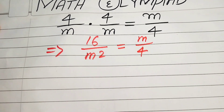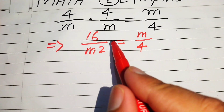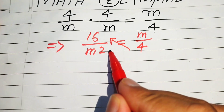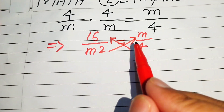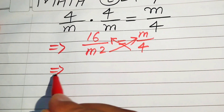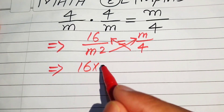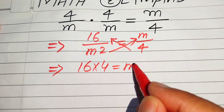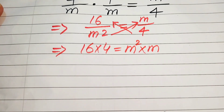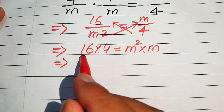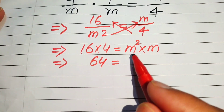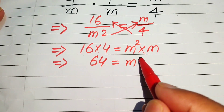Now in the next step we need to cross multiply the values. We multiply 4 by 16 and m squared by m. So when we cross multiply, it will be written as 16 times 4 equals m squared times m, which gives us 64 equals m cubed.